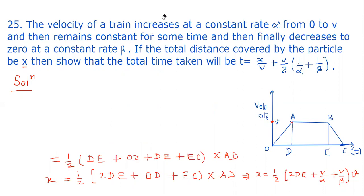Now we further simplify. 2x/v = 2DE + v/alpha + v/beta.